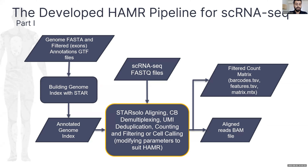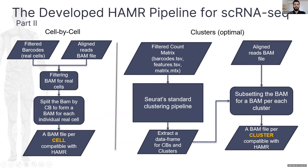The first part of the pipeline is the mapping step. We use STARsolo to do the aligning, cell barcode demultiplexing, UMI deduplication, counting, and cell calling. We ensure that the parameters are compatible with HAMR. The inputs are the annotated genome index and the raw single-cell RNA-seq FASTQ files. The main outputs are the filtered count matrix and the aligned reads BAM file that meets HAMR requirements.